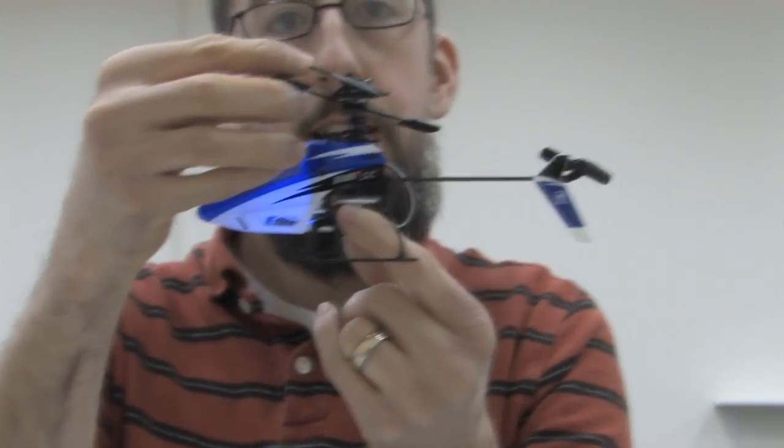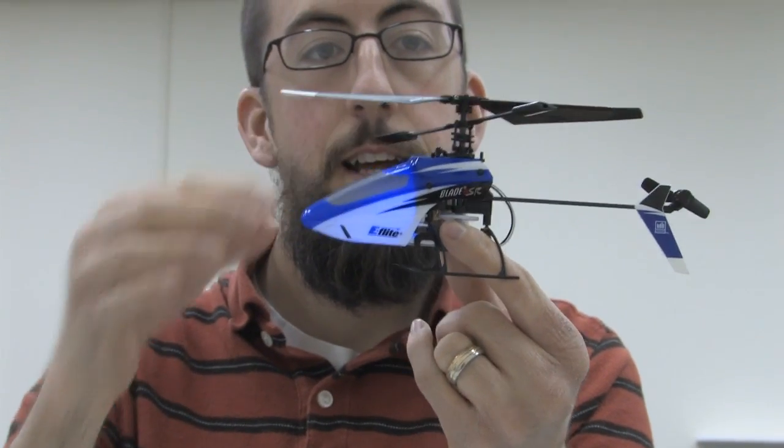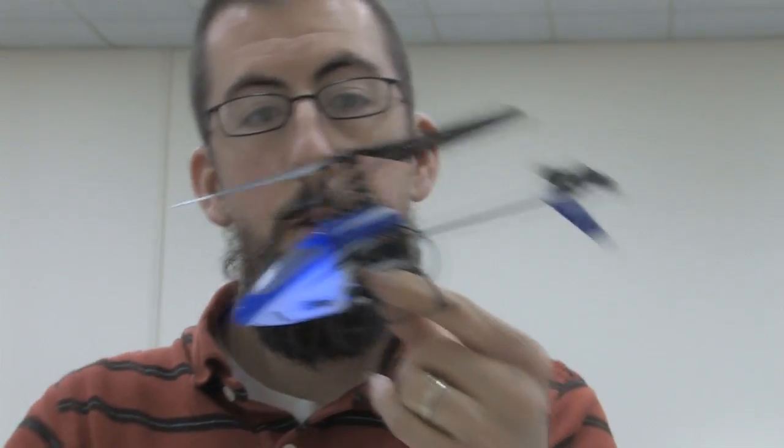And the way that that works is by adding pitch to one blade by tilting this whole thing. See how one levels out while the other one gets more pitch? By tilting one like that, you can add more lift one way and make it go forward and back.